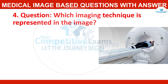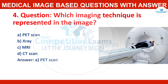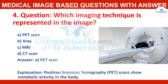Which imaging technique is represented in the image? Options: PET scan, X-ray, MRI, or CT scan? Correct answer: PET scan. PET stands for Positron Emission Tomography — it scans show metabolic activity in the body.